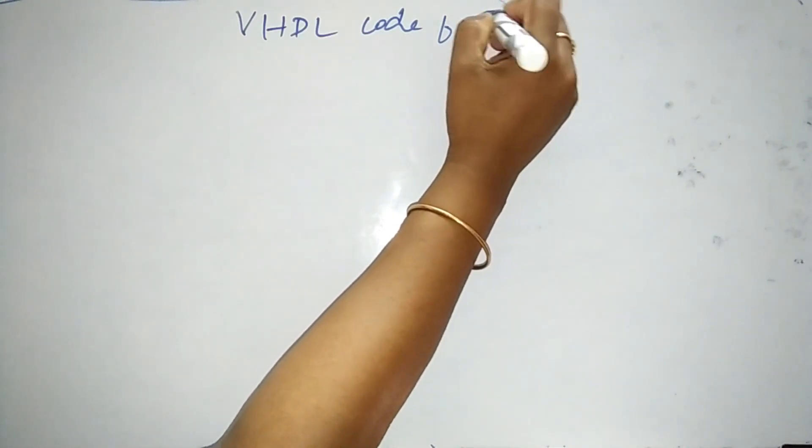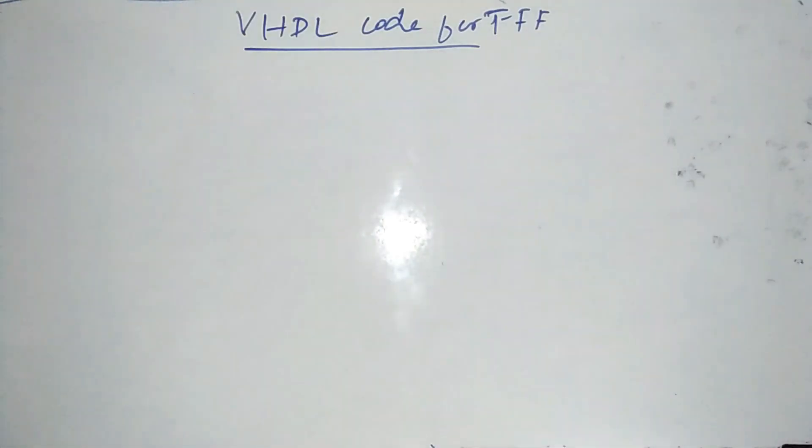Yes students, we have seen a few VHDL coding for JK-flip-flop, SR-flip-flop, counters, D-flip-flop. So today we will see how to write a coding for T-flip-flop.